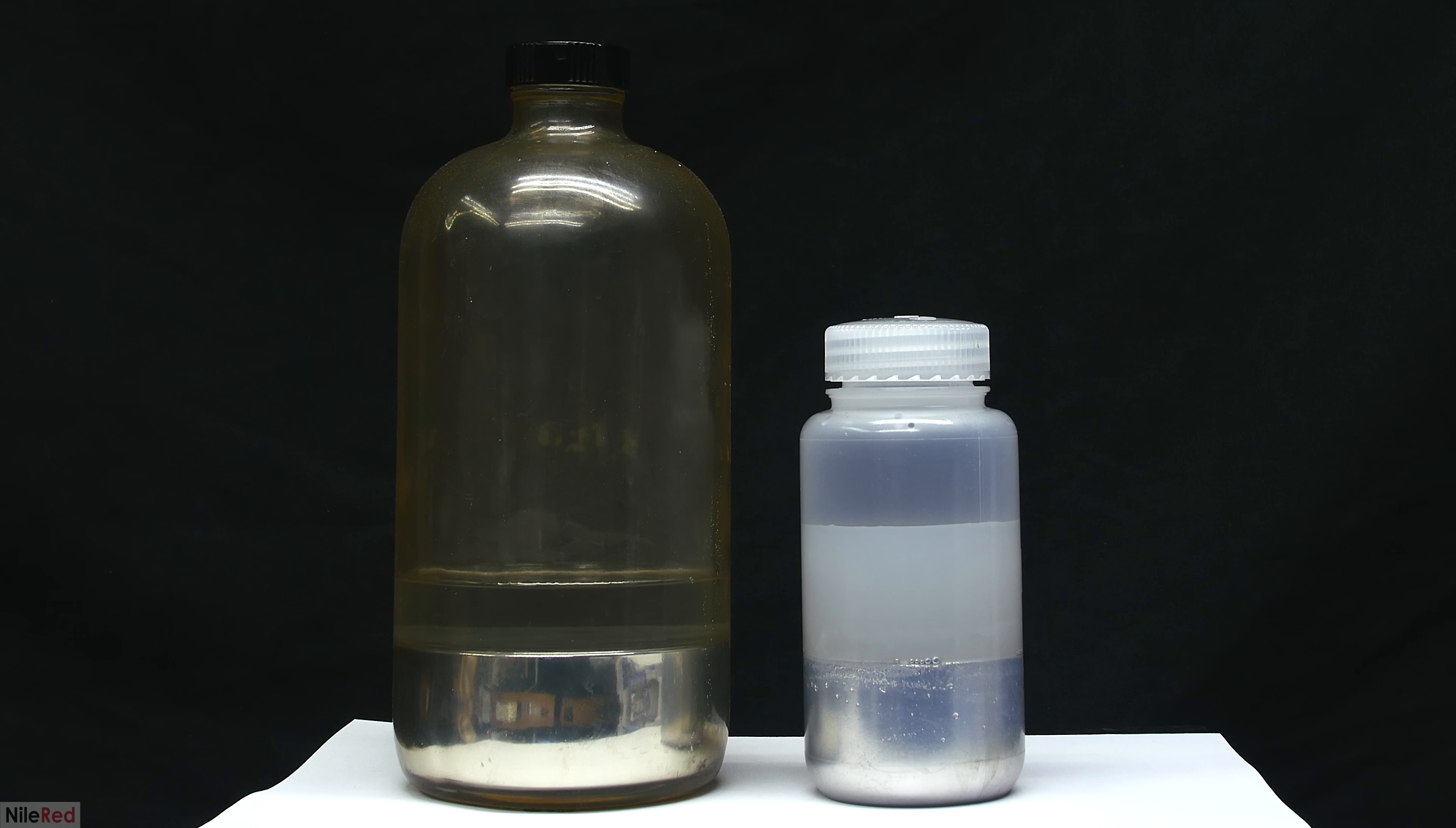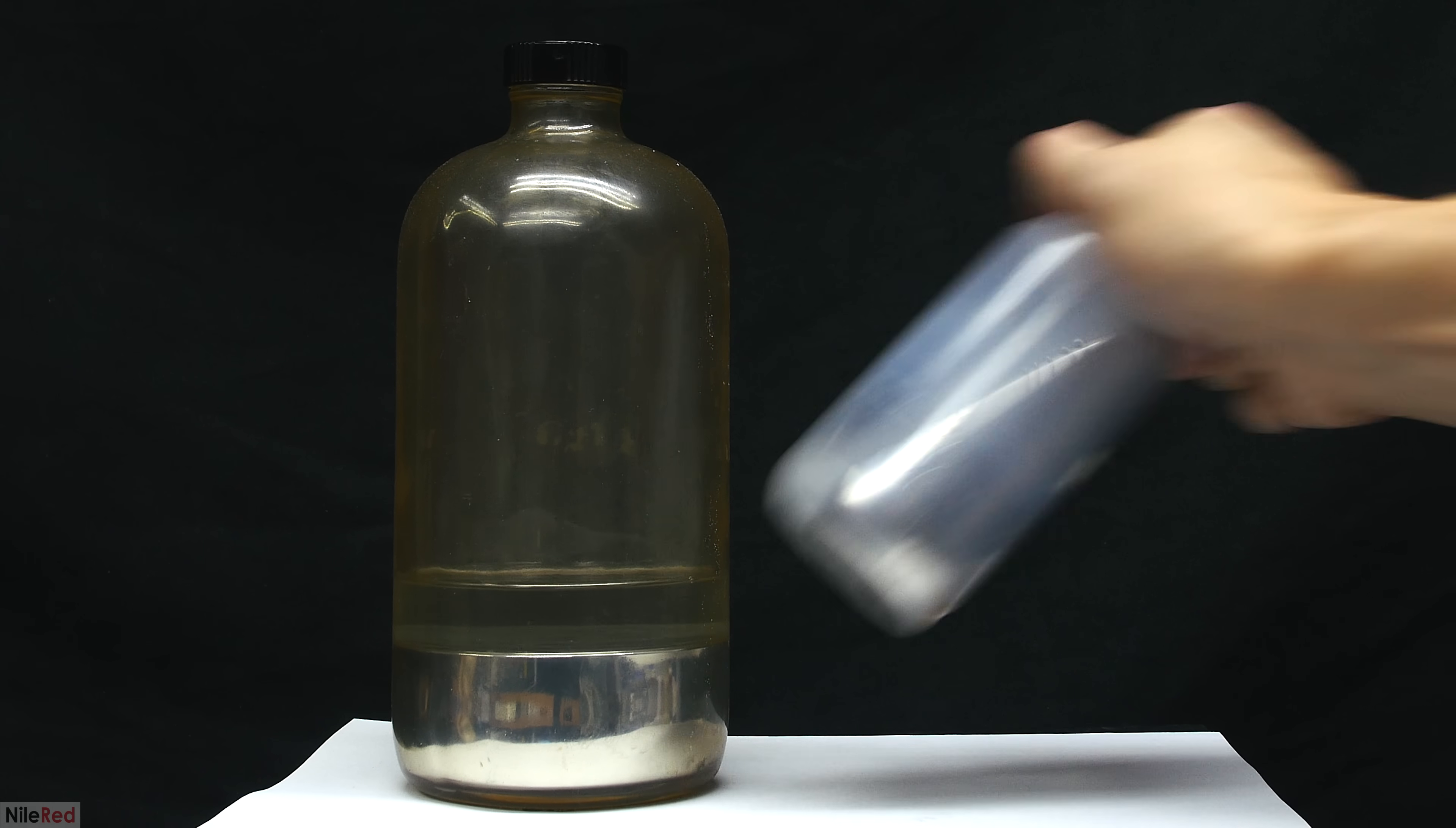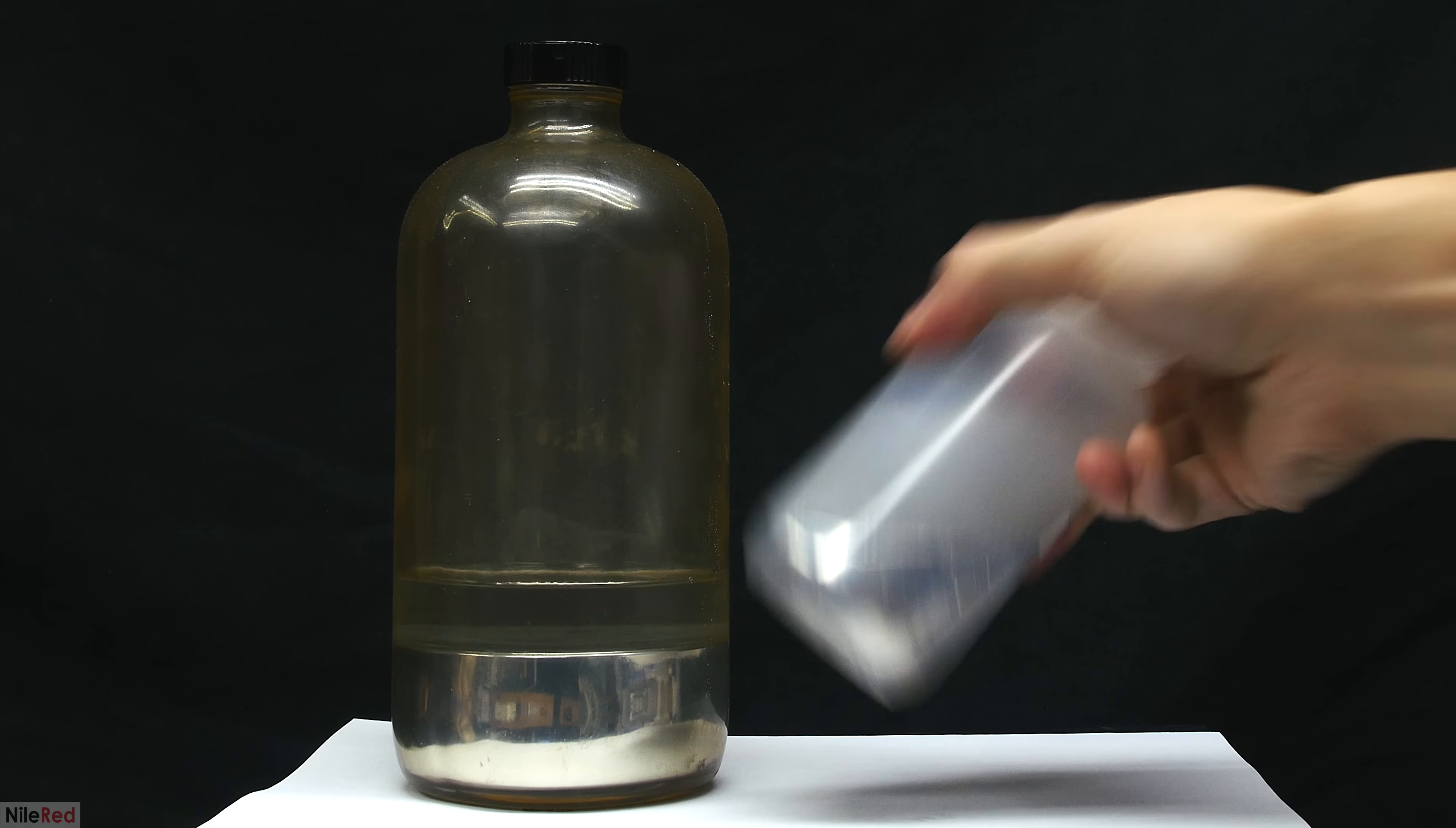The mercury that I'll be distilling today is actually from two separate sources. The stuff on the right is what I cleaned in my previous video, and since then, it somehow got oxidized and dirty. The mercury on the left was received and cleaned much more recently, and so it still looks pretty good. The liquid that you see floating above the mercury is just water, and it's used to keep down the mercury vapors.